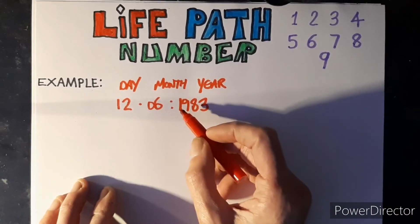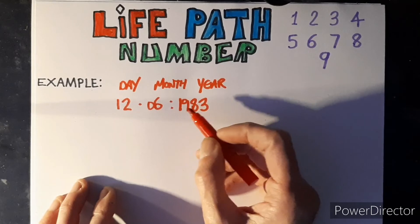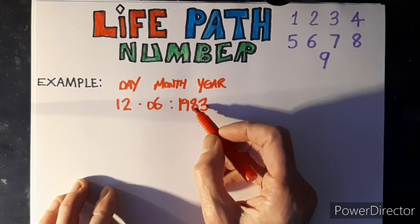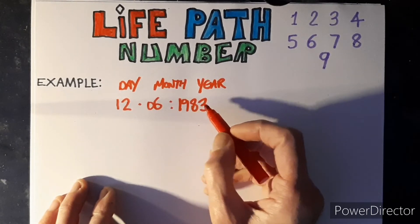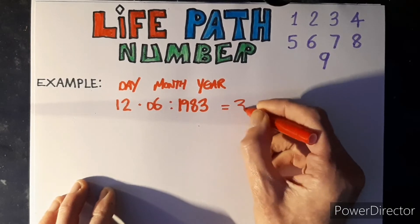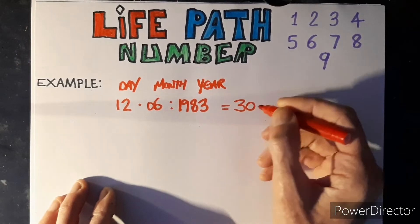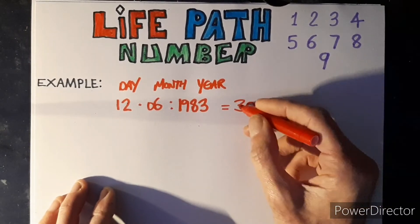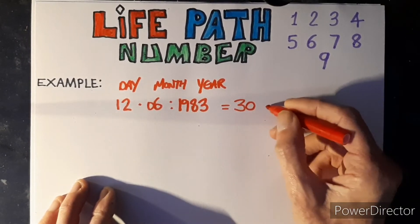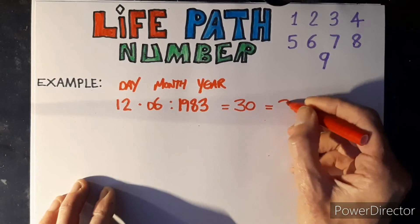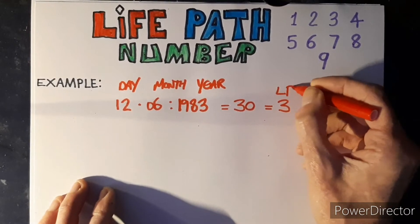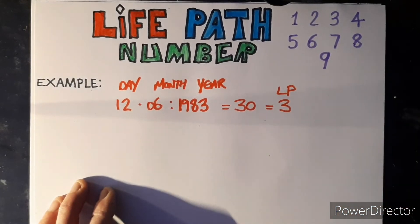Continuing the addition: twenty-seven, nineteen, twenty-seven, thirty. So we get 30, and three plus zero equals three. Your life path number would be number three.